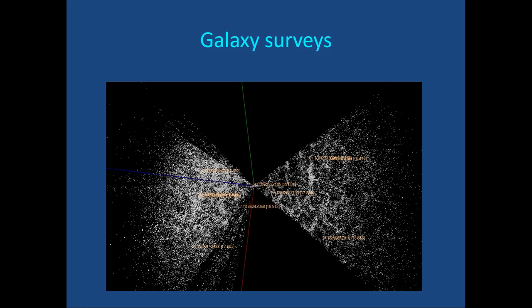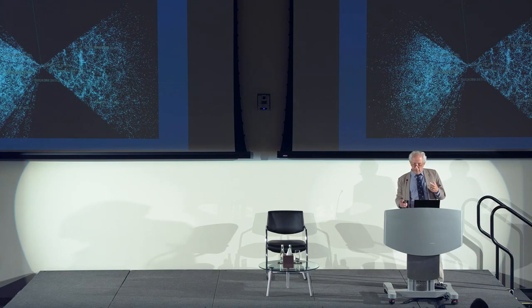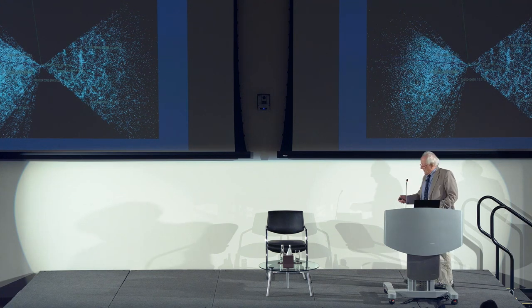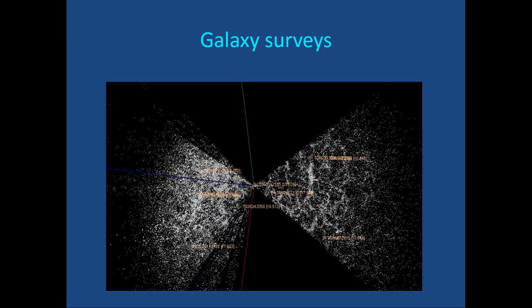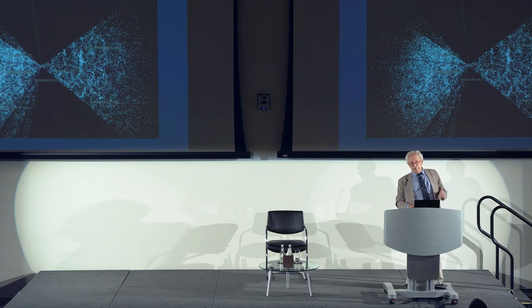Galaxy surveys map the distribution of galaxies in distance and angle across the sky. Using redshift measurements — expensive in observational time until fiber optics — big surveys now show large-scale structure: great walls, voids, and filaments. Taking a cross section of the sky in two opposite directions reveals how vast the observational effort is to produce these pictures.